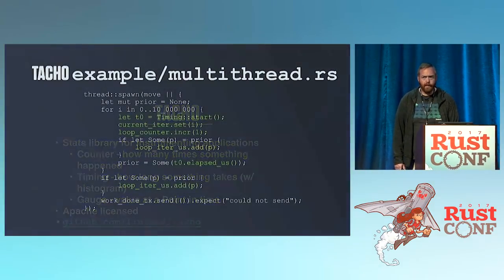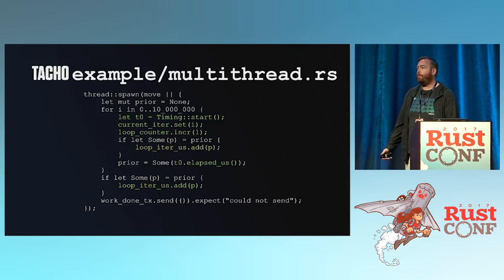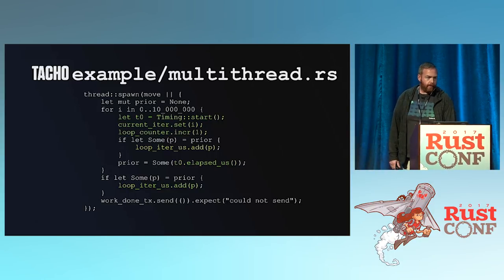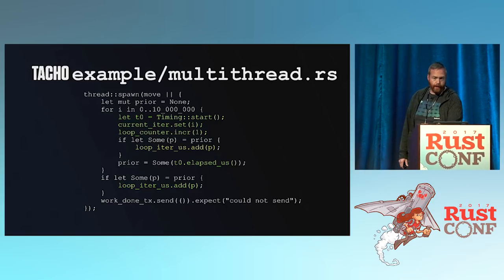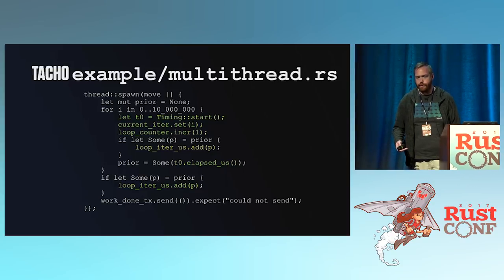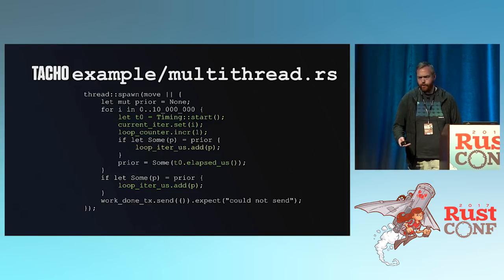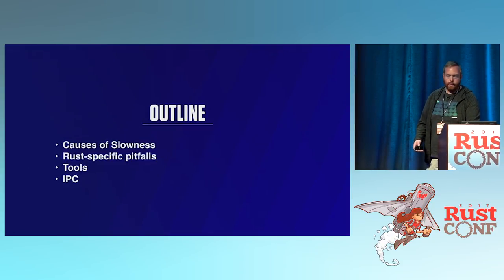I'm going to use Taco and two of our macro benchmarks as a driver for discussing the topics I'm here to talk about today. Here is a multi-threaded macro benchmark where we have a timing, measuring how long it takes to do an action. We loop about 10 million times inside a single program. We set the current iteration, increment a counter, do this 10 million times, and at the end send a signal to a channel saying we're done.